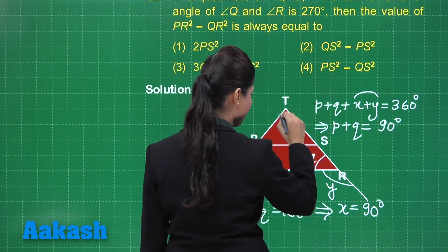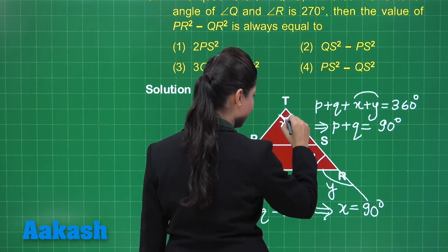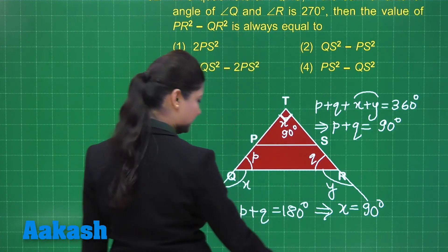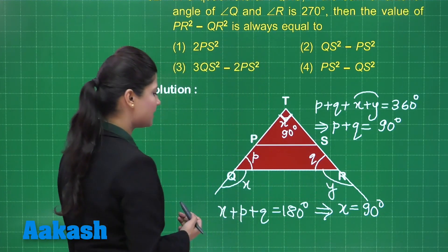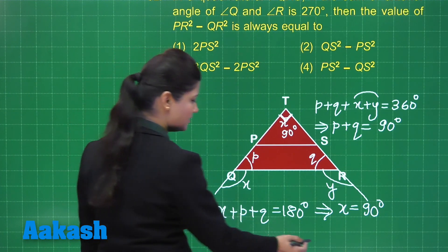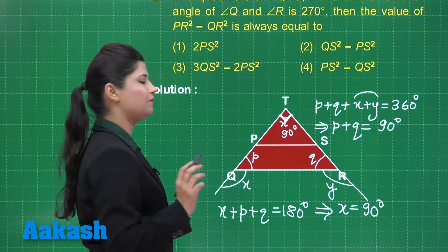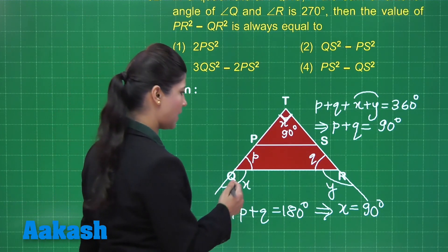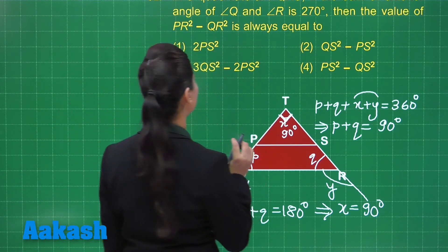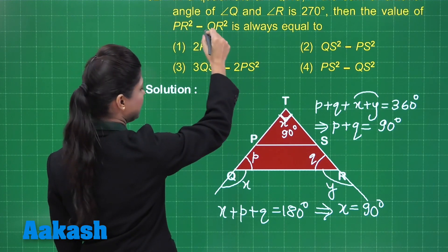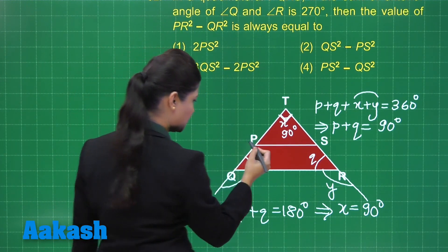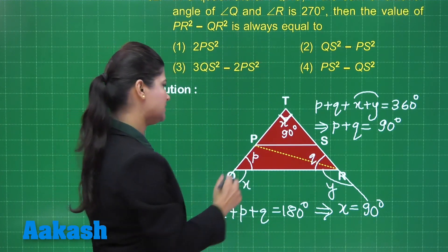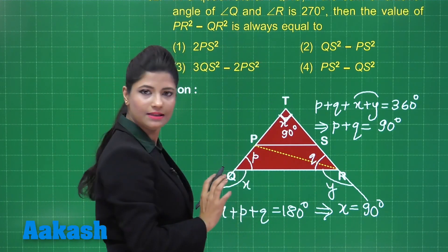In triangle TQR, if the angle at T is X, then X plus p plus q equals 180 degrees. Since p plus q is 90 degrees, X equals 90 degrees. This makes angle T a right angle, so triangle QTR is a right triangle. After joining PR, angle T is 90 degrees.